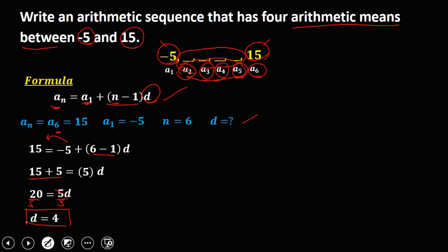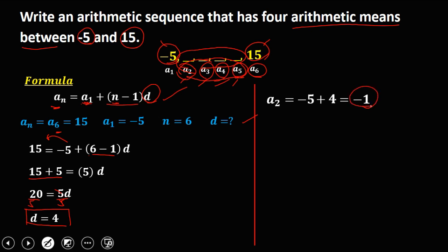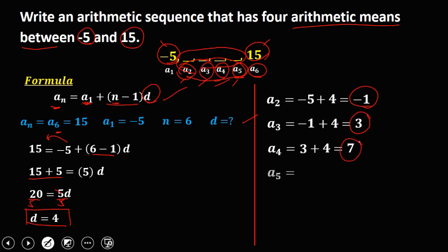To solve for the unknowns: a sub 2 equals a sub 1 plus the common difference, which gives negative 1. Then a sub 3 equals a sub 2 plus the common difference, which gives 3. Then a sub 4 equals a sub 3 plus the common difference, which gives 7. And a sub 5 equals a sub 4 plus the common difference, which gives 11.